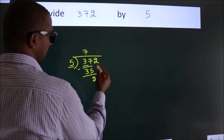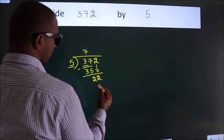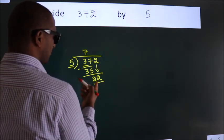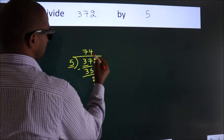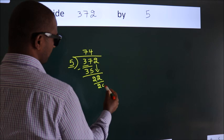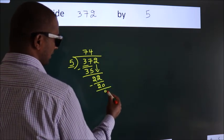After this, bring down the beside number. So 2 down, making 22. A number close to 22 in the 5 table is 5 times 4, 20. Now we subtract. We get 2.